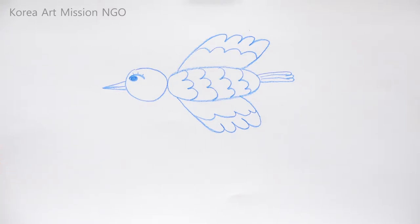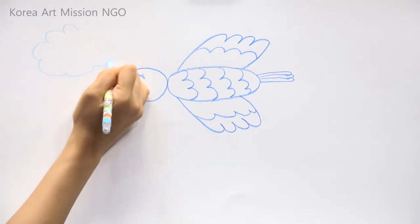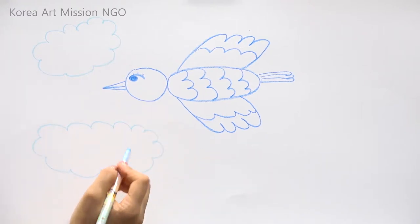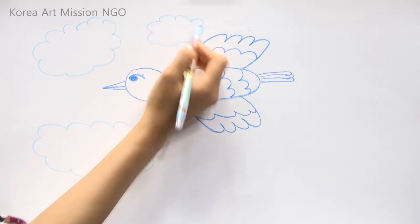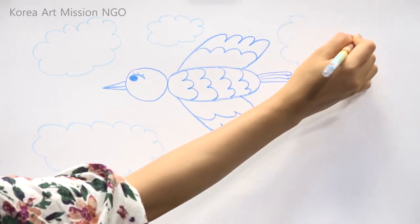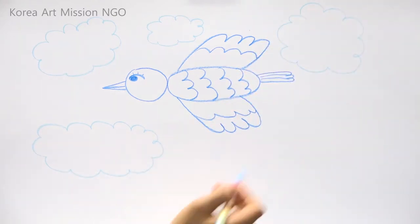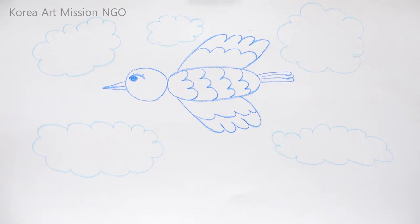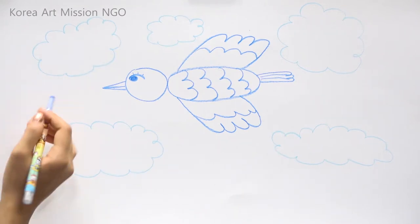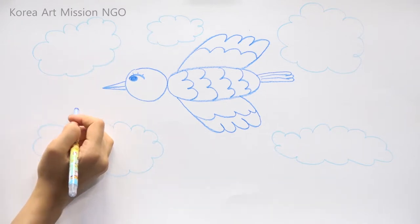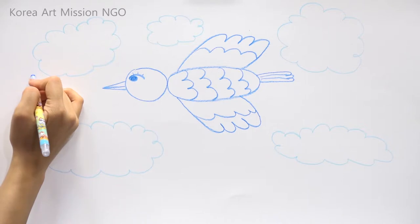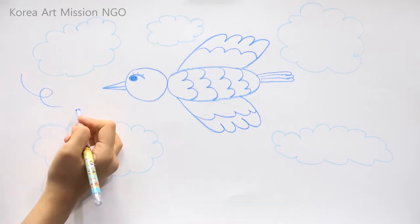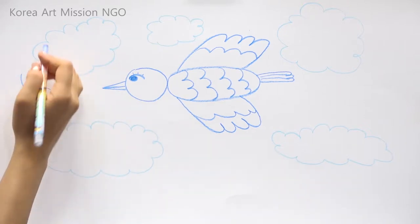Next, I'll try to draw a cloud in the sky. I'll draw long clouds and small clouds, and try to draw circular clouds and various shapes of clouds. Everyone, can we see the wind with our eyes? No, we cannot see it. But things that cannot be seen can be expressed through pictures. So let me try to express how the wind blows by drawing in circles.